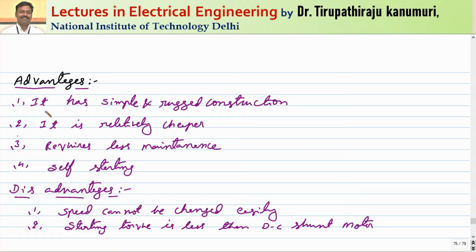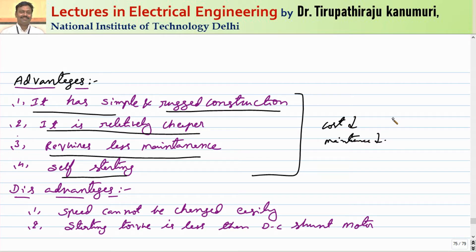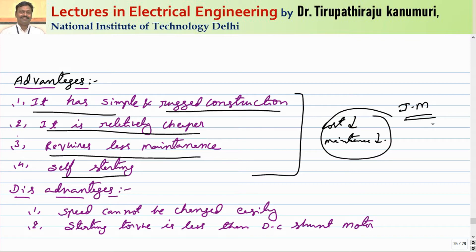The induction motor has several advantages: it has a simple and rugged construction, is relatively cheaper, requires less maintenance, and has self-starting property. Because the cost and maintenance are less, most motors used in our day-to-day life are induction motors — including ceiling fans. These may be single-phase or three-phase induction motors.